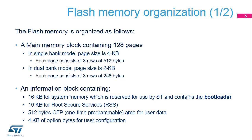The main memory contains 128 pages. In single bank mode, the page size is 4 kilobytes, each page consisting of 8 rows of 512 bytes. In dual bank mode, the page size is 2 kilobytes, each page consisting of 8 rows of 256 bytes.